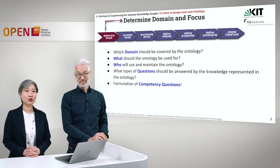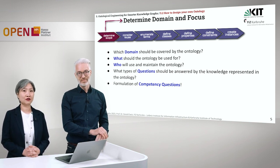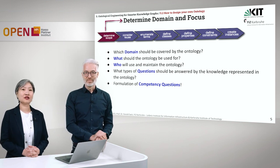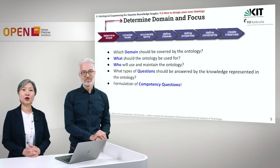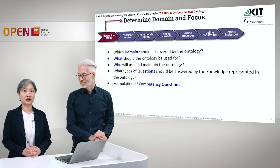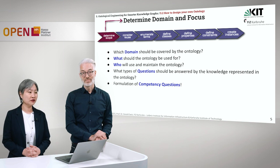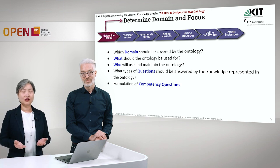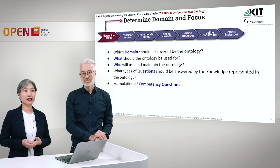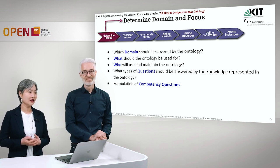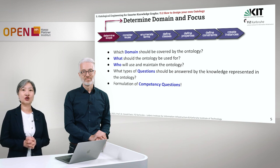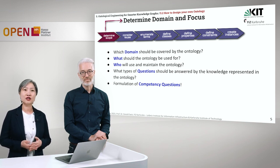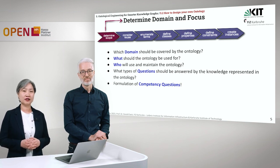The first thing we need to consider is the scope, domain, or focus of our ontology. We need to ask: which domain should be covered? What should the ontology be used for, and what kind of applications are we going to build on top of it? It's also important to consider who will use and maintain the ontology — whether scientists or normal users. And what types of questions should be answered? These are the competency questions.